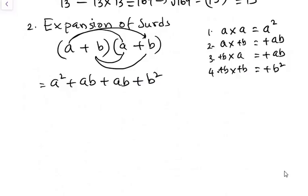And when we have this expansion, we can have our final as a². And the coefficient here is 1 and 1. So we have 2ab plus b².